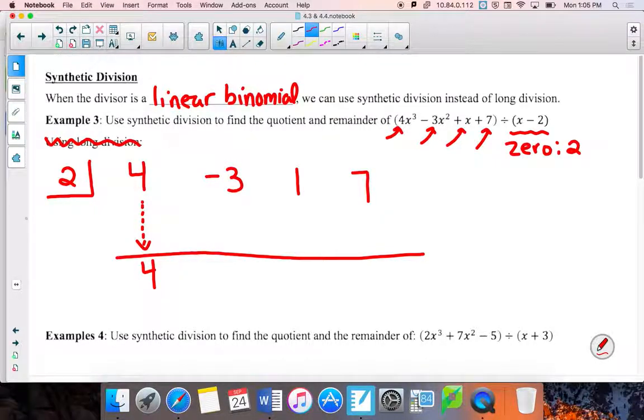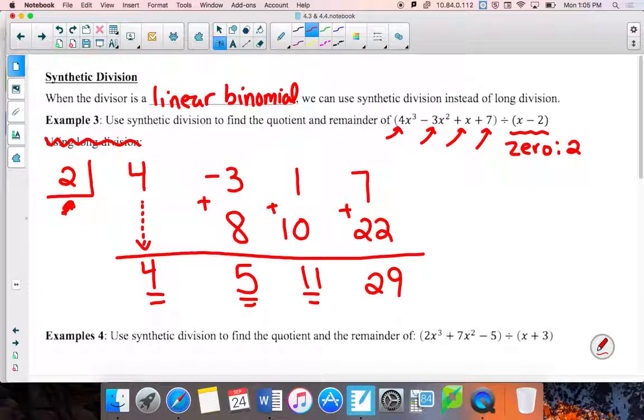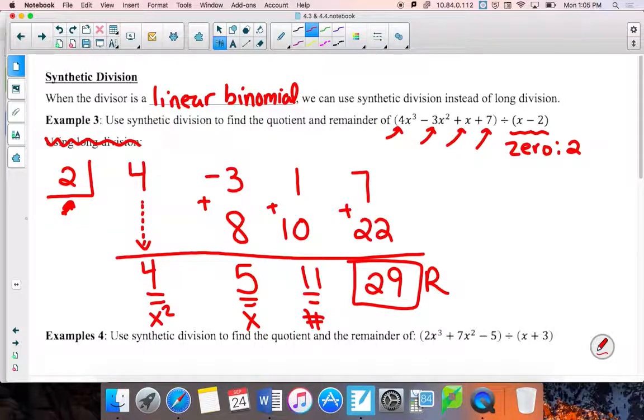With synthetic division, you always bring down your first number. Just bring him down. Then those bottom numbers multiply with your number in the box. So 4 times 2 gives me an 8. Now add these two numbers together, positive 5. Now remultiply. 5 times 2 gives me 10. Add those numbers together, I get an 11. Time to multiply. 11 times 2 gives me 22. Add those together, I get a 29.